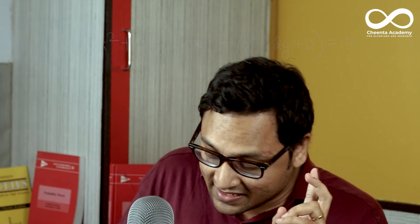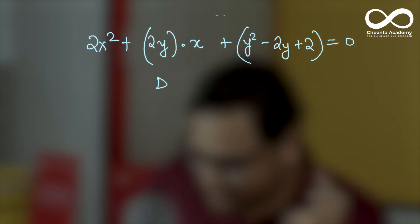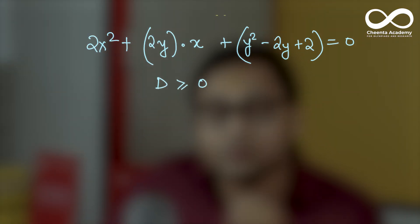We are pretending that y is a constant. If y is a constant, then if there is a real number x that satisfies this equation, then the discriminant of this quadratic must be greater than or equal to 0. It's a quadratic in x. If you are pretending y to be a constant, then it's a quadratic in x. If it has a solution, either one solution or two solutions, then the discriminant has to be greater than or equal to 0.